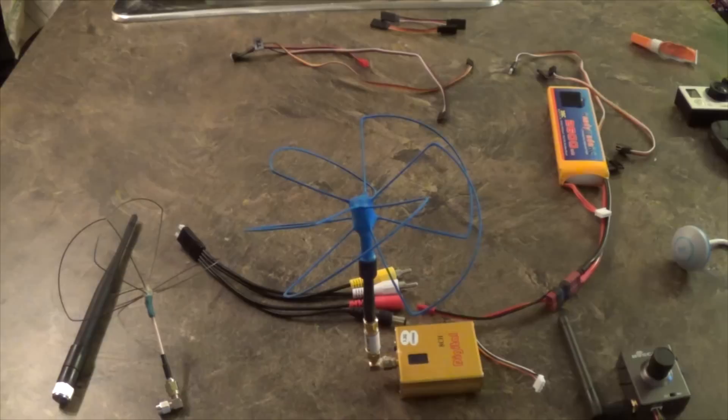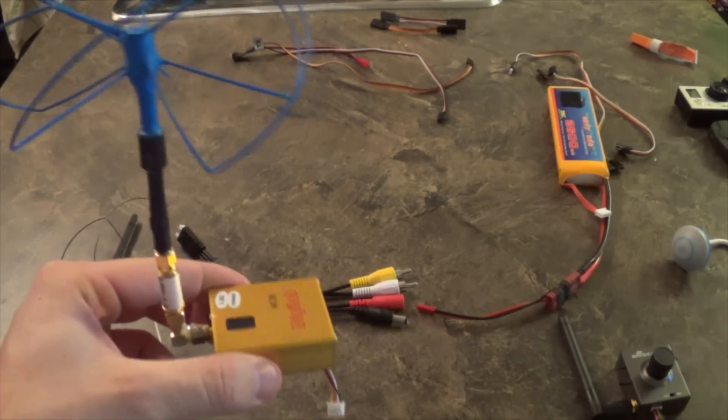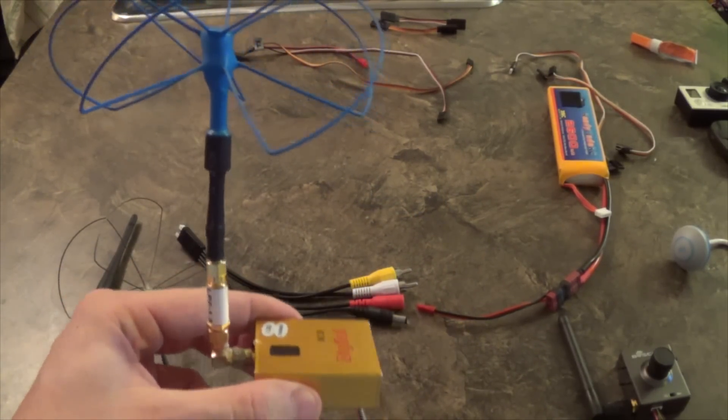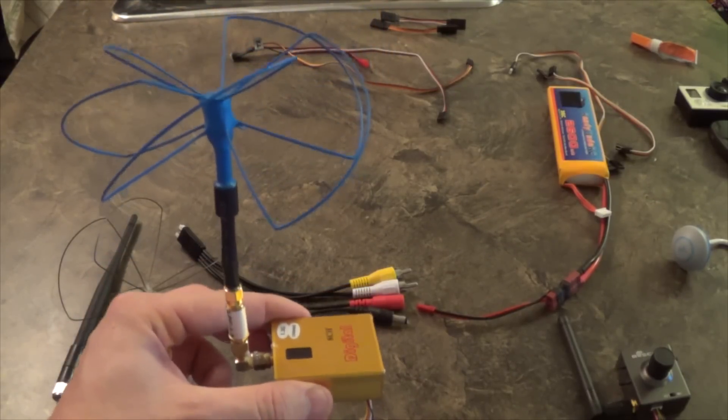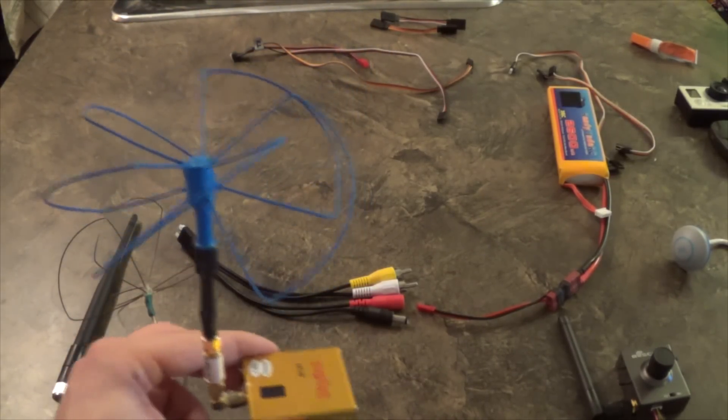Before we even talk about anything, there are five basic rules in FPV that I have made up. The first rule is make sure your antenna is plugged into the transmitter before powering it. It's really easy to remember but people tend to forget that.